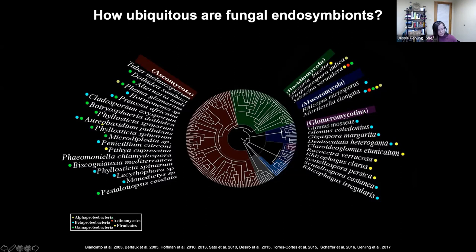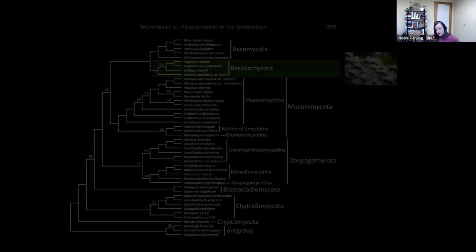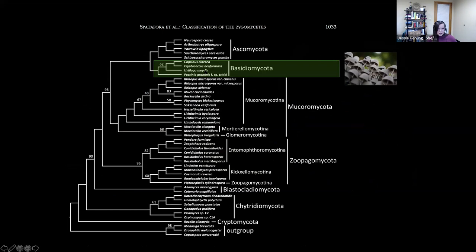Let's narrow in on the Mucoromycota fungi. This is another depiction of the fungal tree of life. The way that we read these phylogenies is just like a regular tree: the trunk is the oldest and the leaves or branches are very closely related individuals — the closer a leaf is together, the more closely related they are. When I say I'm a mycologist, a lot of people immediately go to mushrooms. And that's not untrue — these basidiomycota fungi are the mushroom-forming fungi — but you'll notice it's actually a very small proportion of the diversity in the kingdom.